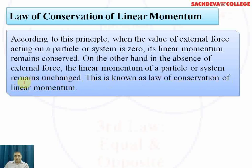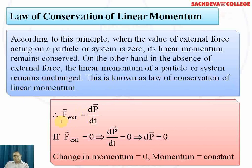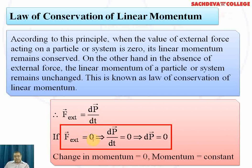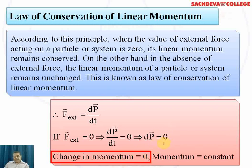Mathematically, the law of conservation of linear momentum states that the external force applied on a body equals the rate of change of momentum: F = dp/dt. When no external force acts — that is, F_external is zero — then dp/dt equals zero, meaning the derivative of momentum with respect to time is zero, and therefore the change in momentum dp is zero.